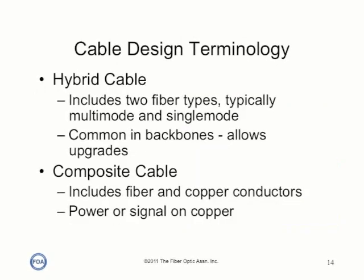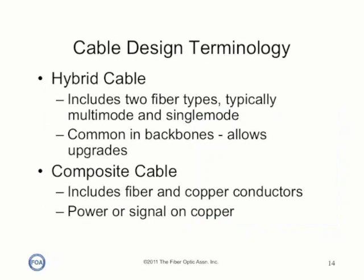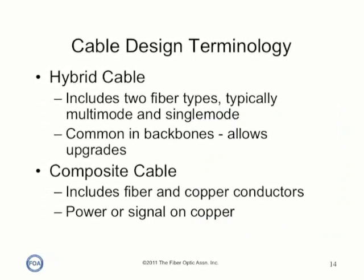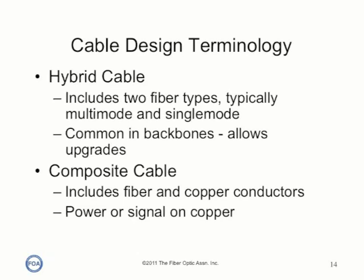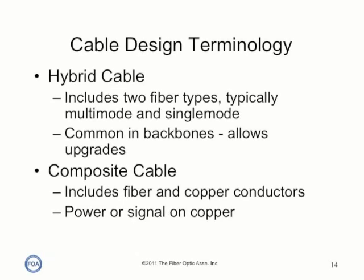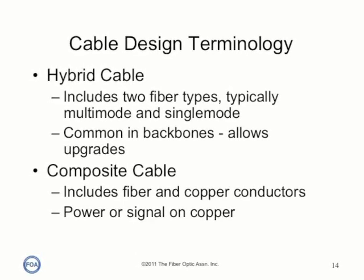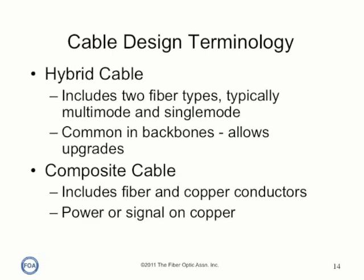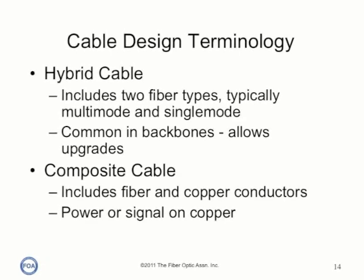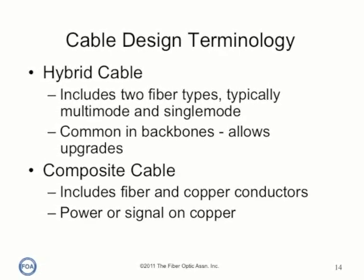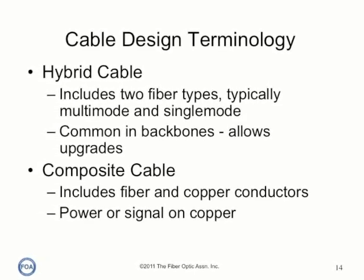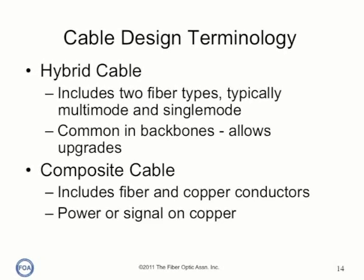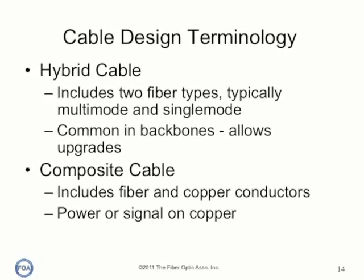These two terms can often be confusing as people mix them up. Hybrid cable includes two fiber types, typically multi-mode and single-mode, and is common in premises backbones where it allows upgrades to higher bandwidth systems. A composite cable includes fiber and copper conductors, either for power or signal.